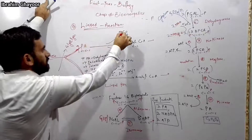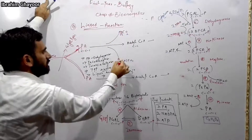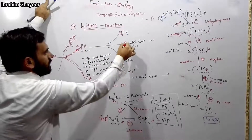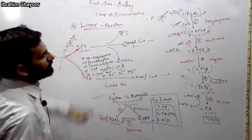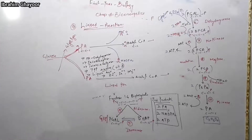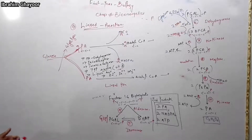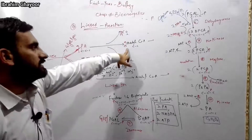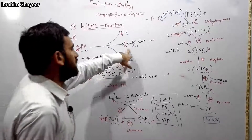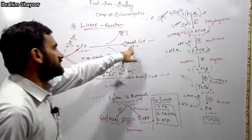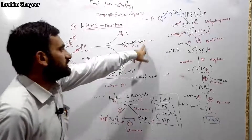The product of the link reaction is acetyl-CoA — a 2-carbon compound attached to coenzyme A. The link reaction produces acetyl-CoA, CO2, and NADH2 from each pyruvate. This acetyl-CoA then feeds into the Krebs cycle for further oxidation and ATP production.